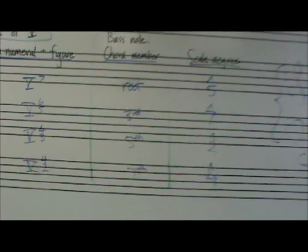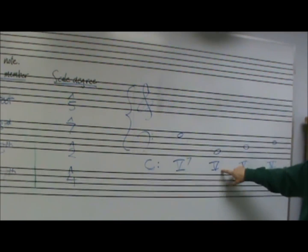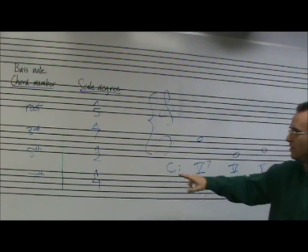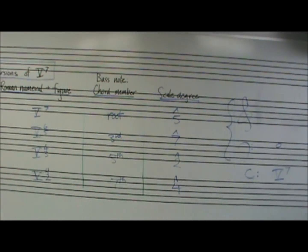I can look right at this second symbol here where I've got B as our bass note and I hear a dominant 7th sound. I can say, well, B is scale degree 7, therefore I know it's got to be a 565 and I can go there directly.